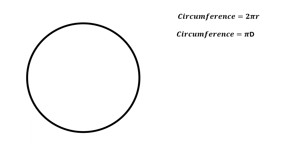We learned that circumference is the length of the curved line that forms a circle. To solve this length, we use the formula: circumference equals 2 times pi times radius, or pi times diameter. What is pi?